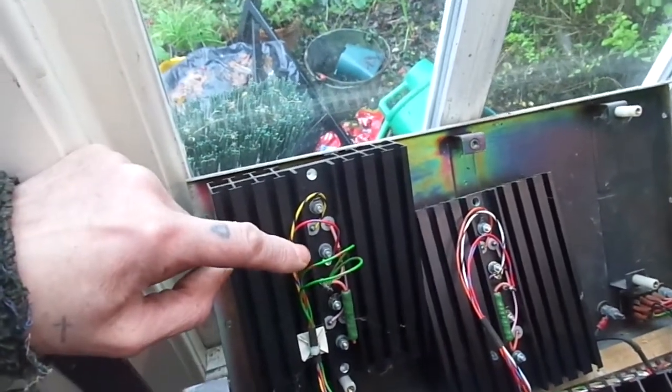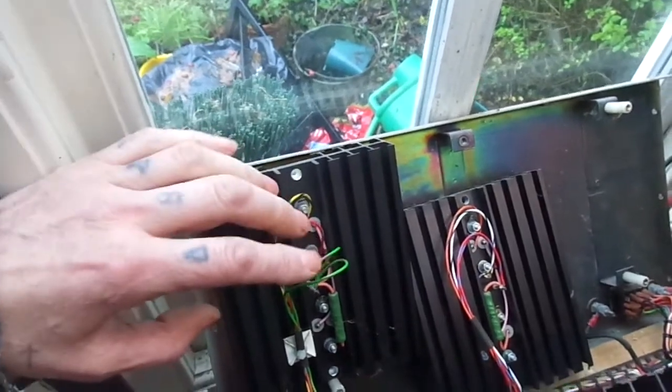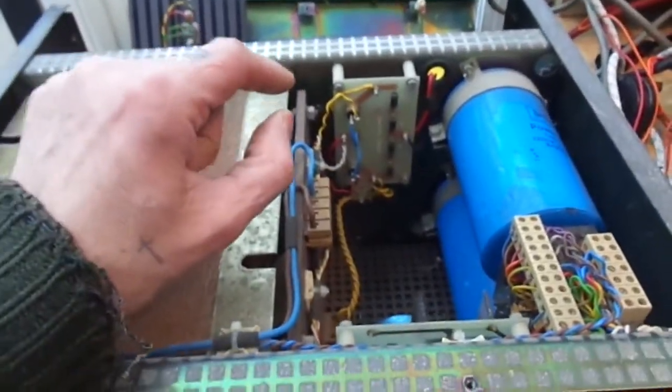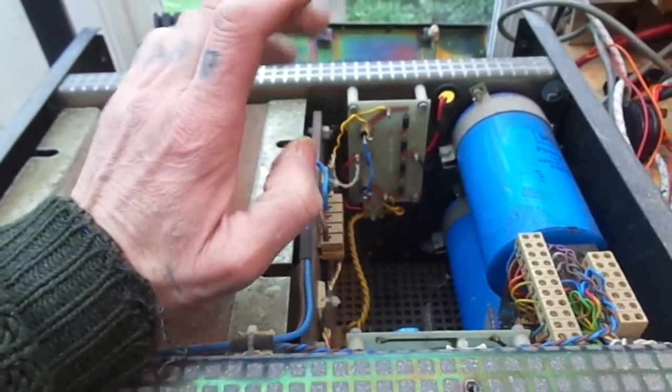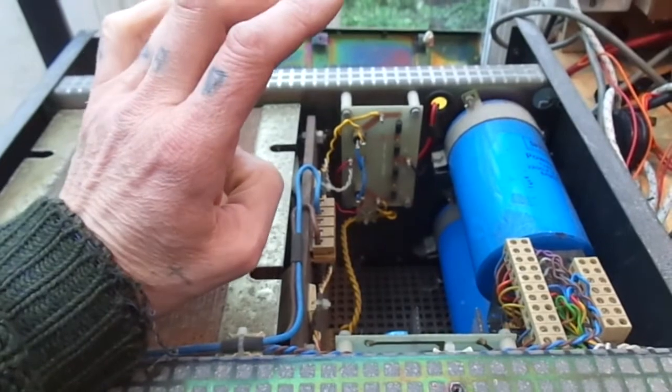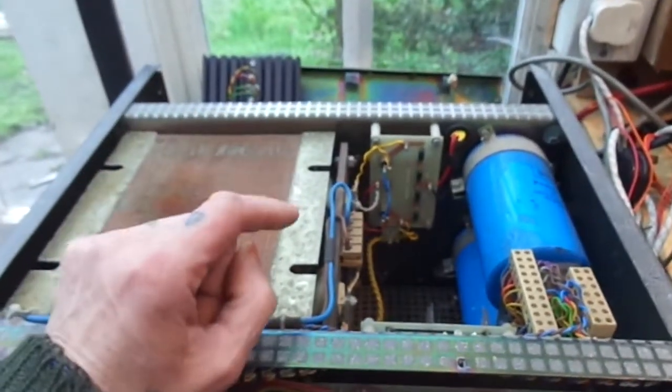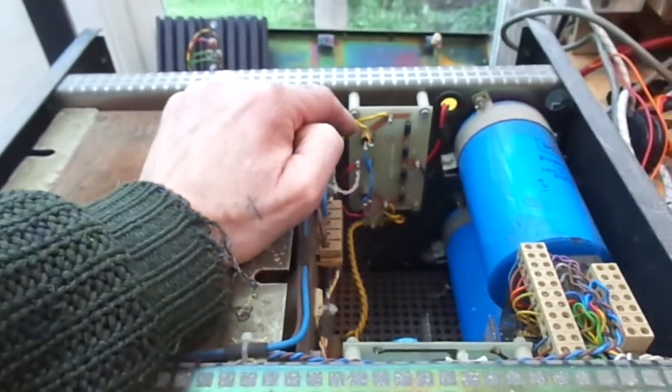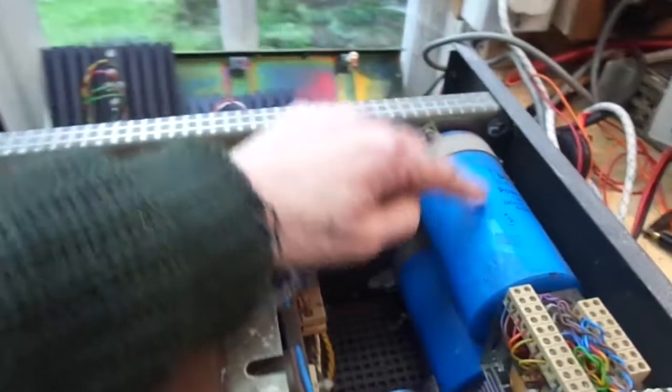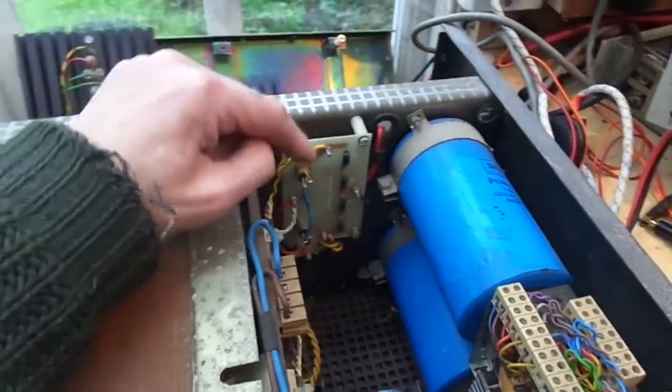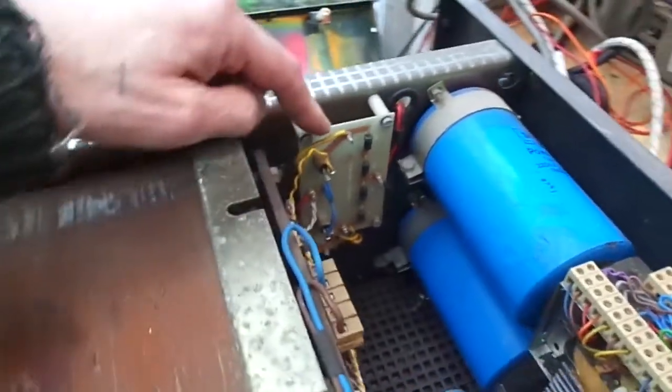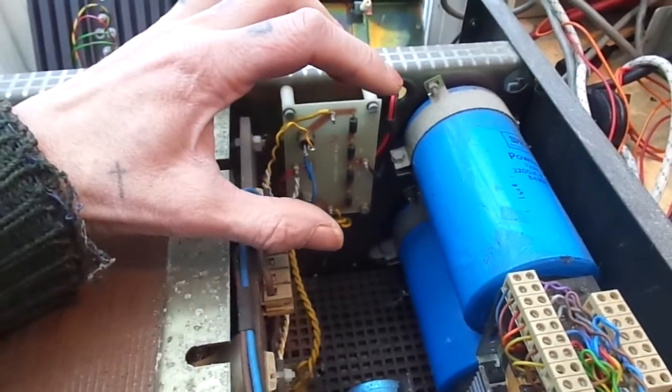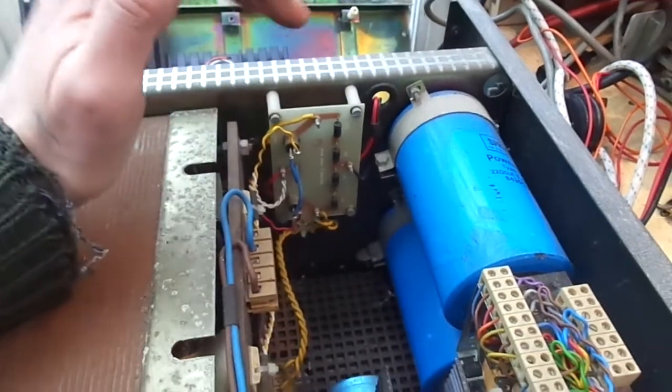I've just checked all those over for shorts, they seem okay. Originally I thought this was a thyristor or SCR controlled power supply. I think it partially is. We've got a couple of thyristors here. From what I can see they are controlling, it's basically a bridge rectifier, and they're controlling what goes into these big smoothing caps. So that's our main high voltage I think.